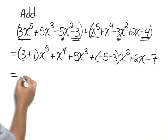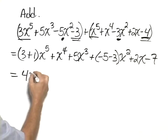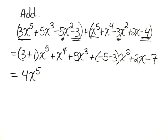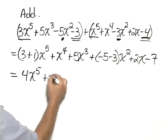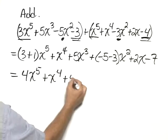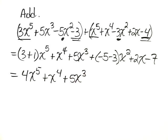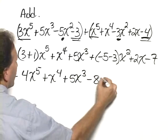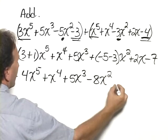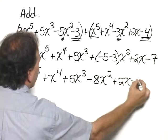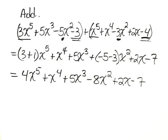Now, let's simplify further. 3 plus 1 is 4, x to the 5th, x to the 4th remains the same, as does 5x cubed. We combine negative 5 minus 3 for negative 8x squared plus 2x minus 7, and that would be our final answer.